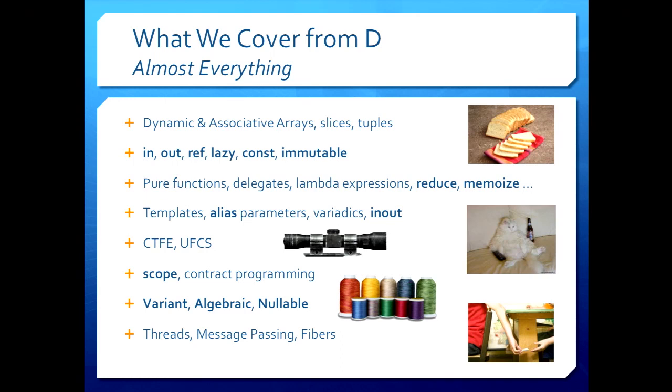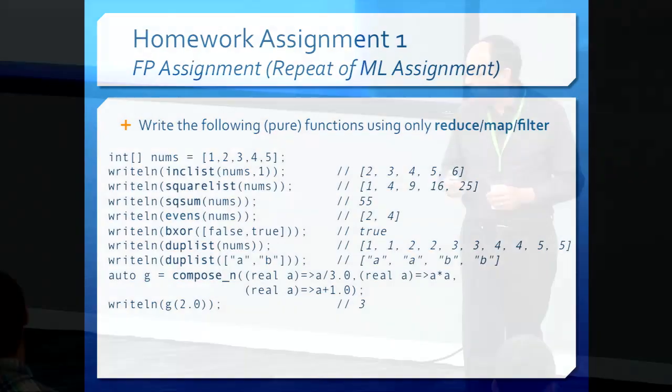But, you know, we cover a very important part of a course like this is the different ways of passing parameters. And so we talk about in, out, ref, lazy, const, immutable, and all that stuff. But, naturally, we spend a lot of time on the functional programming things, templates, of course. And they have an assignment where they use alias parameters to simulate pass-by-need. We do a compile-time function evaluation, universal function call syntax. And they actually have an assignment using nullable, which I'll show you, which is kind of a nice thing. And then their last assignment is a concurrent programming assignment.